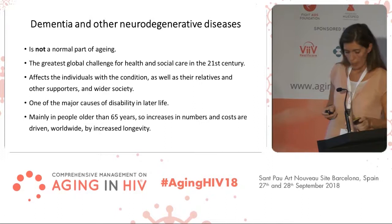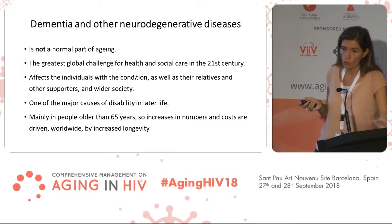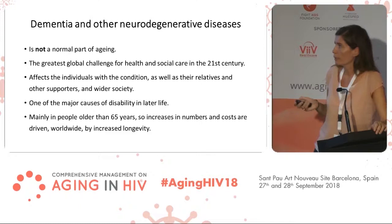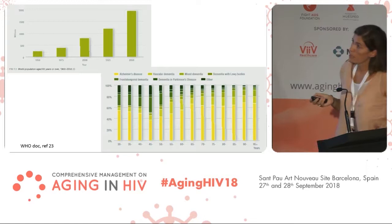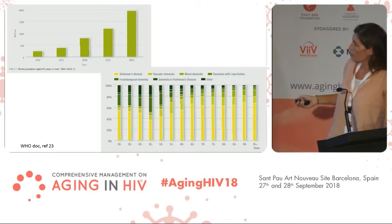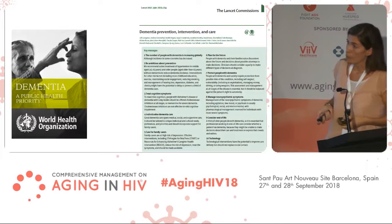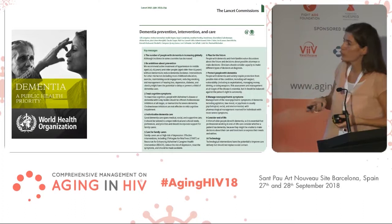Dementia is not a normal part of aging, but it is a huge health problem today. It affects not only the patient but also the relatives, and it is a very significant economic and political problem. It is estimated that by 2050, the number of people with dementia will triple worldwide. Especially in very old people, the most common dementias are Alzheimer's — the most common one — followed by vascular dementia, mixed dementia, and frontotemporal dementia. The World Health Organization and important commissions, like the Lancet Commission, have identified dementia as a priority in recent years.